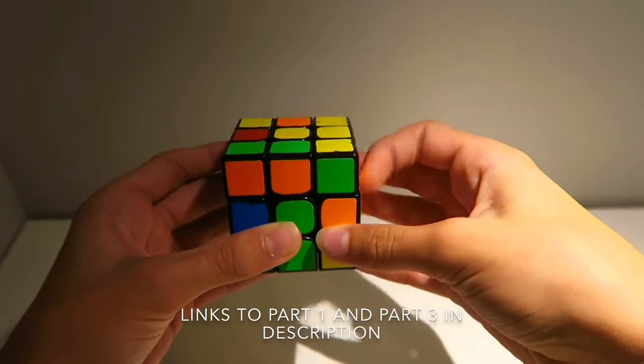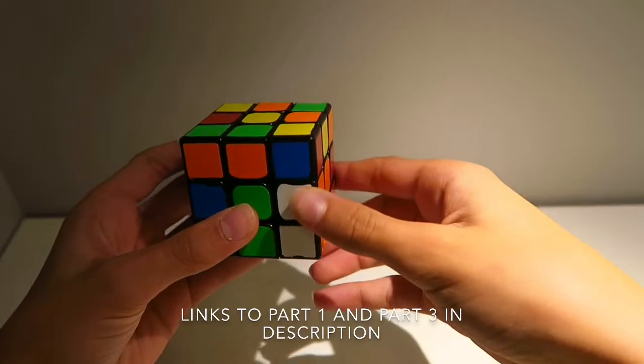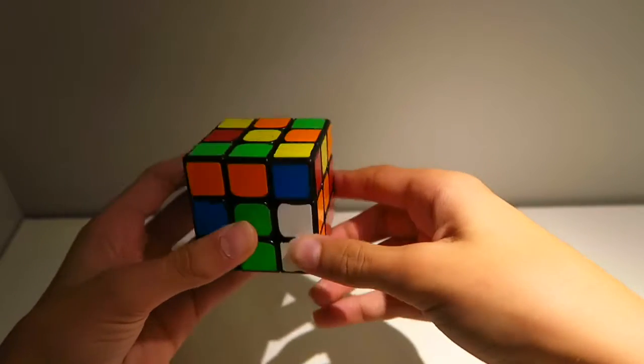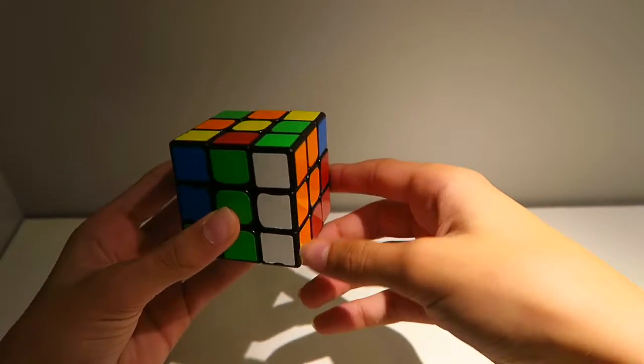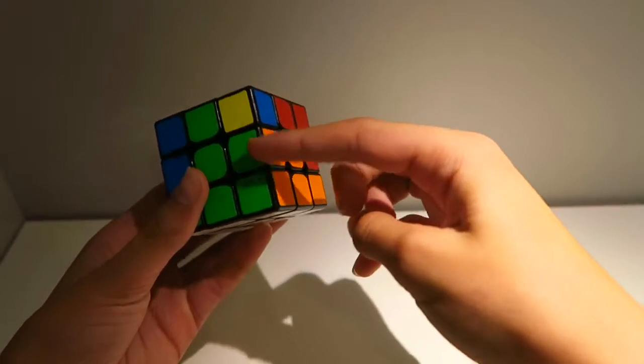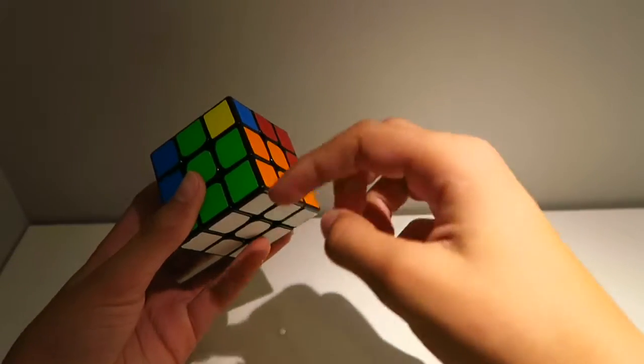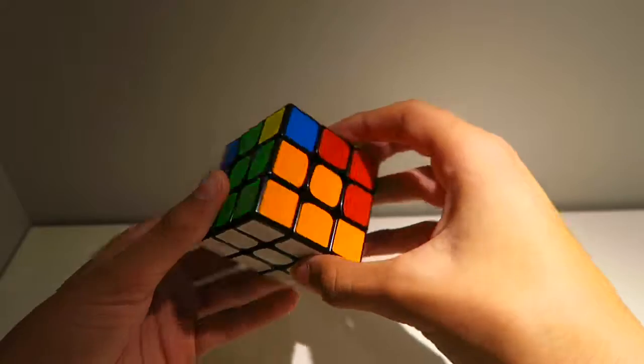Again, white's in front. We move the white to the side, bring out the slot, and put it in the slot and bring it down. As you can see, the edge is in there and that two-by-two block is solved.